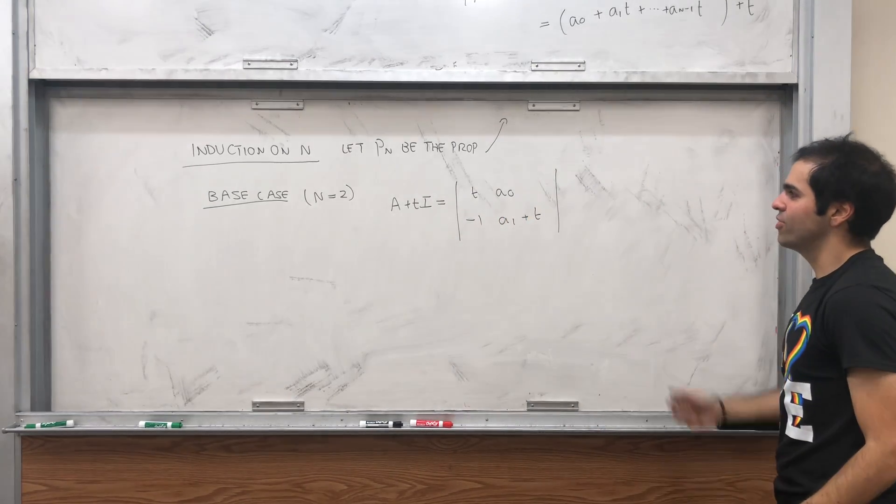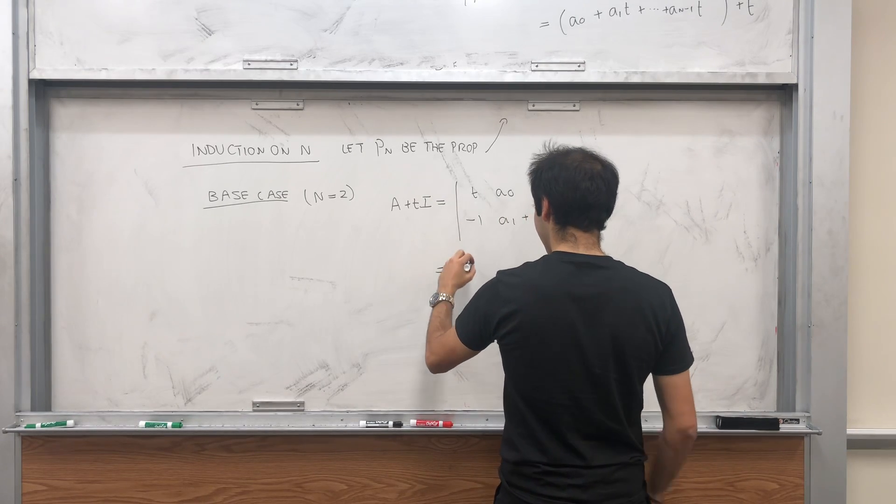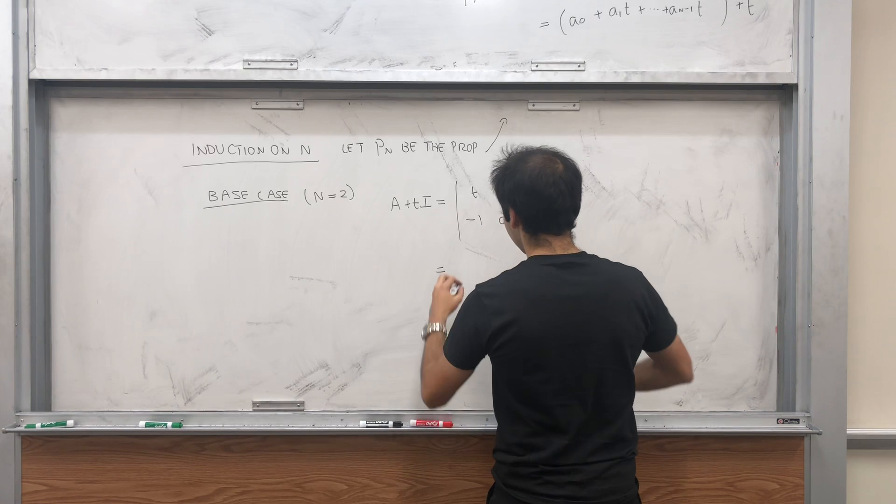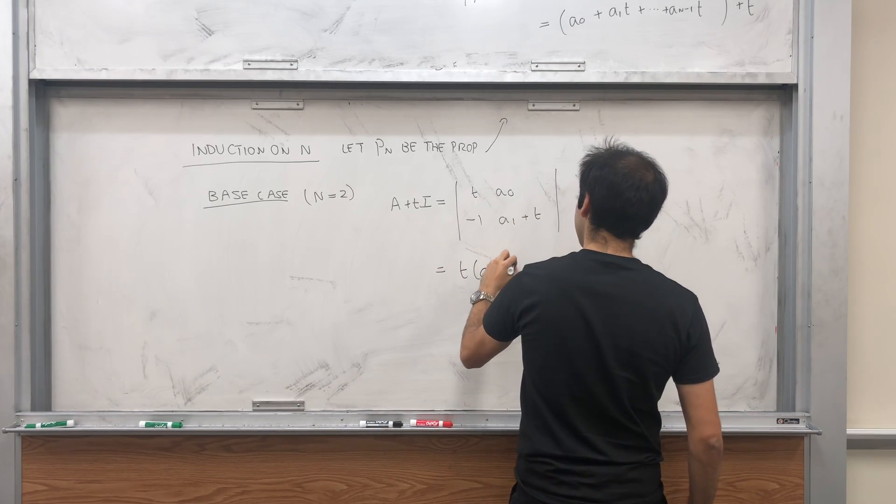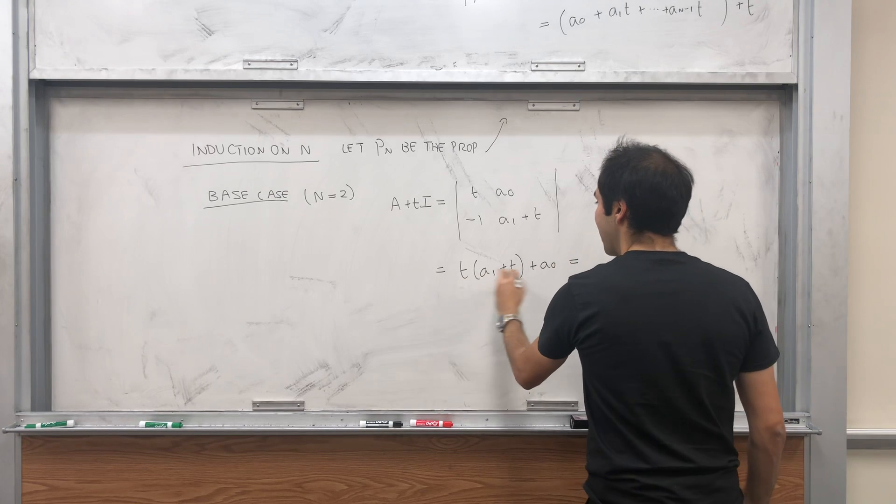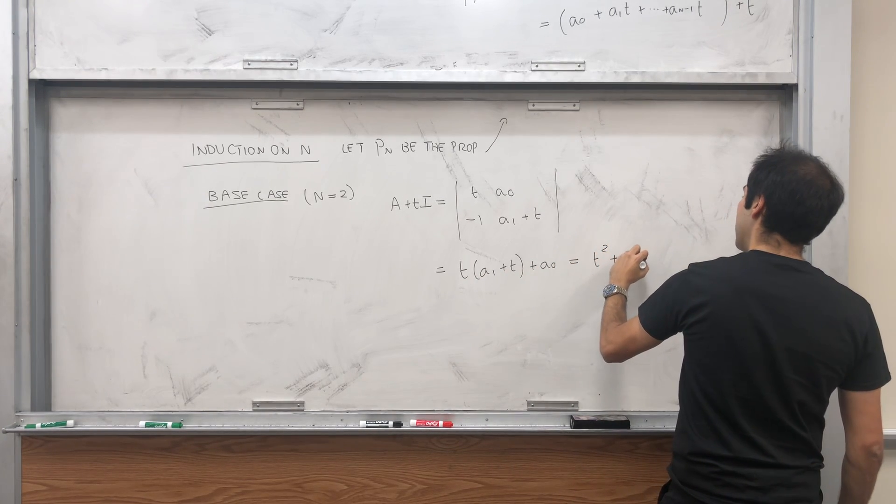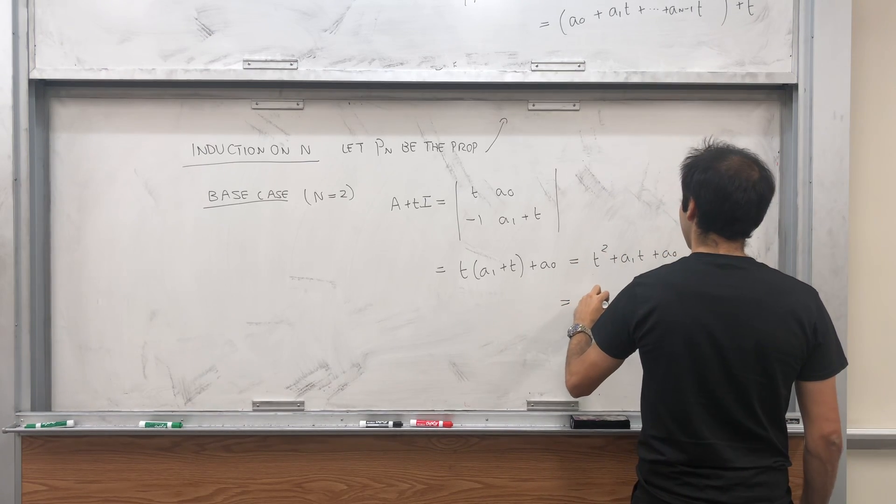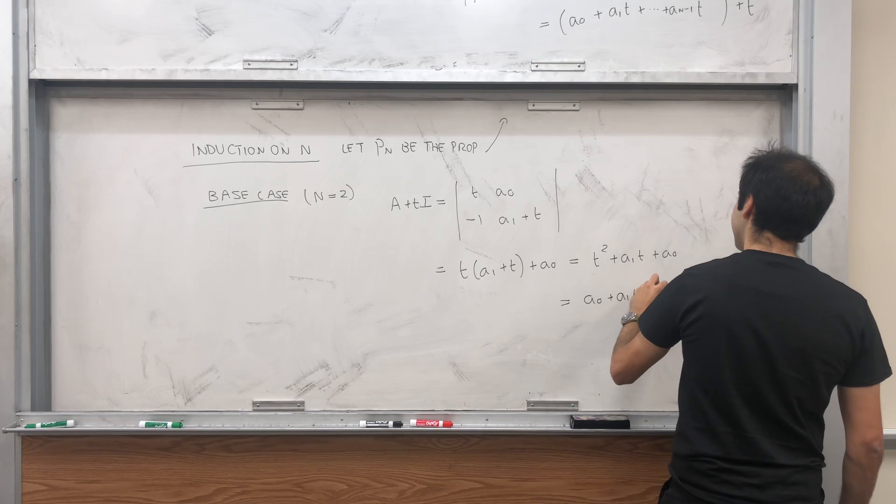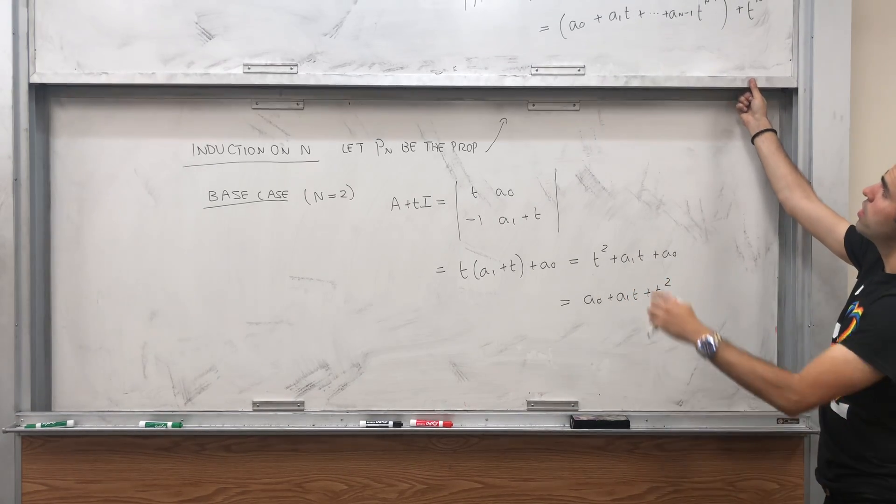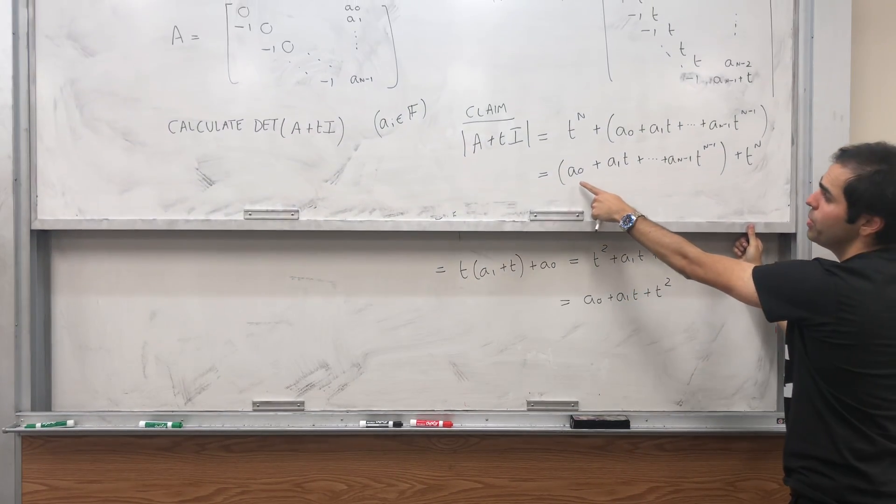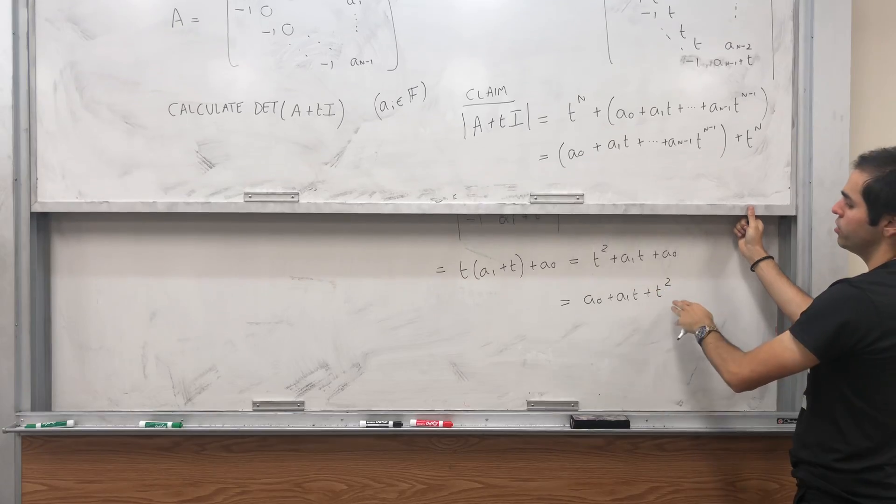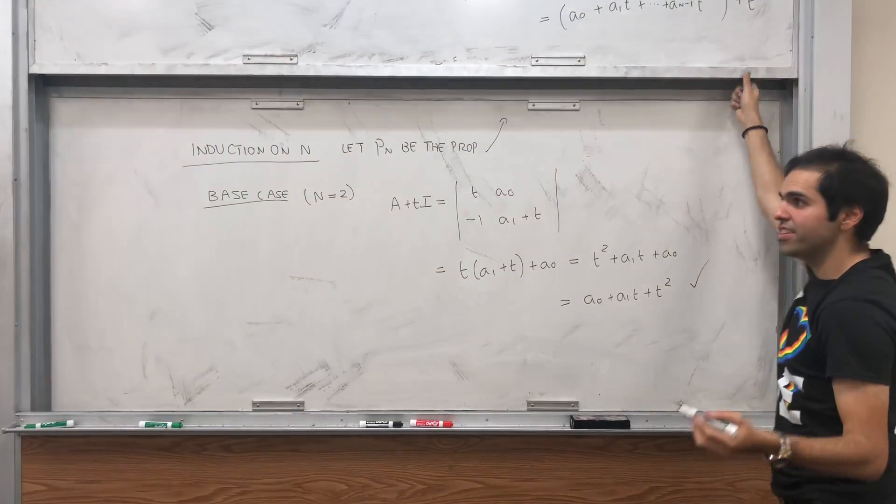And then there's a minus 1 in the diagonal. And then we have A_0. And then A_1 plus T, because A_{n-1} becomes A_1. And then expand it with character, sorry, through the 2 by 2 determinant. So T times (A_1 plus T) plus A_0. Expand it out, and you get T^2 plus A_1*T plus A_0, which is exactly the same thing as A_0 plus A_1*T plus T^2. And that's just what we want. So the base case is shown.